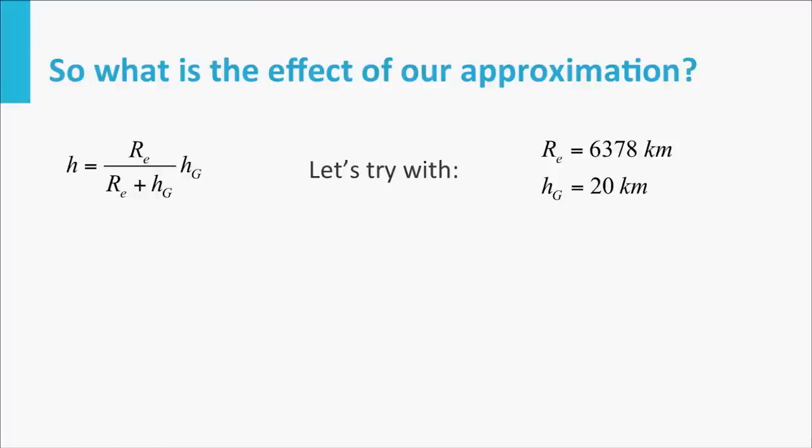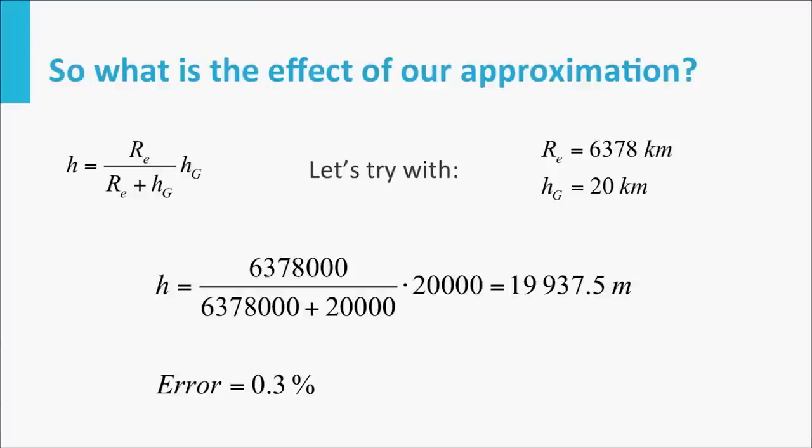If we use our equation and fill in these numbers, we can see that the actual error is very small. At the geometric altitude of 20,000 meters, our geopotential altitude would say that we are only at 19,937.5 meters. This means the error is about 0.3 percent, which is very small. This is one of the reasons why we get away with this approximation and why we use the geopotential altitude.